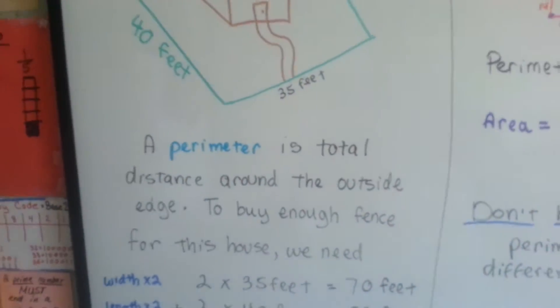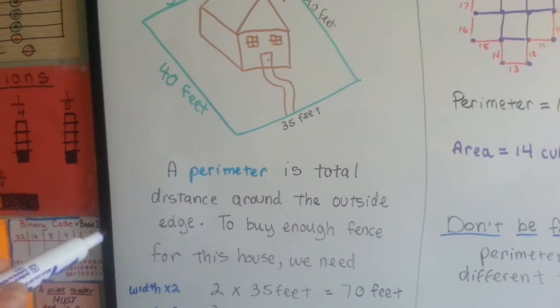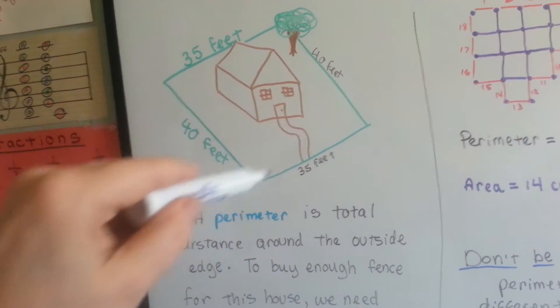So a perimeter is a total distance around the outside edge. To buy enough fence for this house, we need all these measurements, don't we?